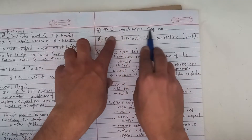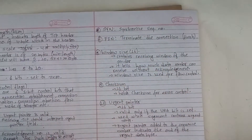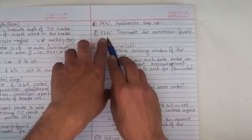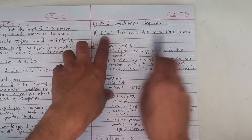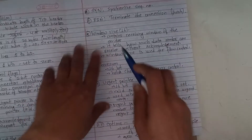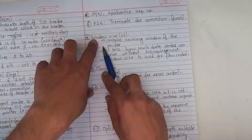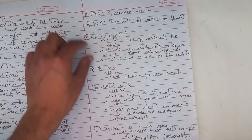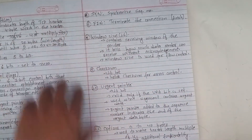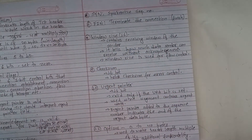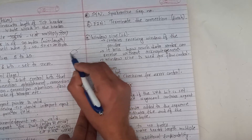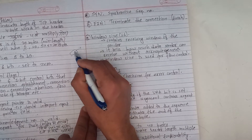The SYN flag — synchronize sequence number — is used for connection establishment during the handshake. The FIN flag is used for connection termination. The window size field indicates the size of the receiving window of the sender.